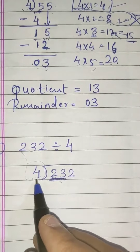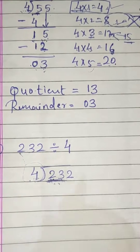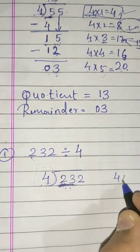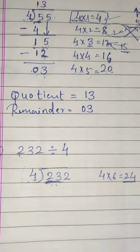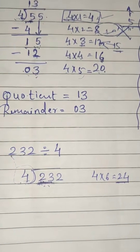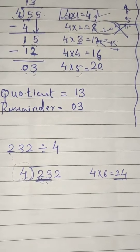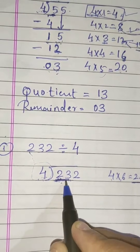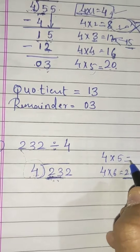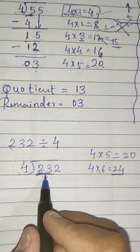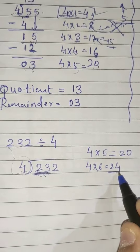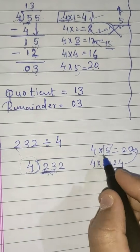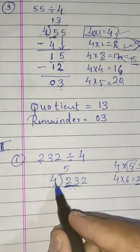Now 23 is bigger than 4, so you can divide it. You have to read the 4 times table until you get close to 23: 4×1=4, 4×2=8, 4×3=12, 4×4=16, 4×5=20, 4×6=24. Since 24 is bigger than 23, you take one less — 4×5=20. So we write 5 in the quotient and 20 below.